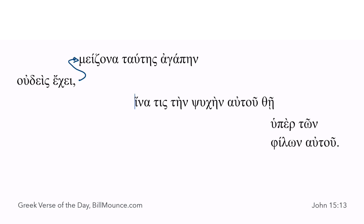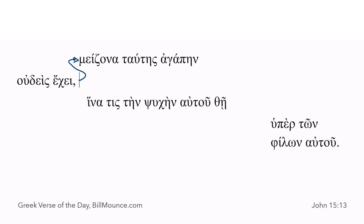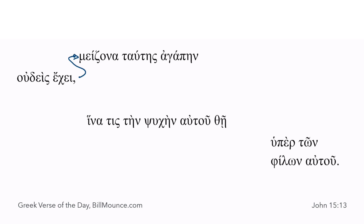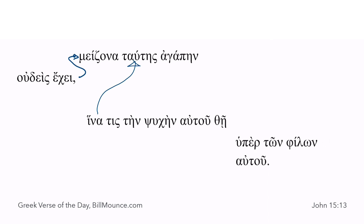If you don't want that last line to wrap, you could always bring it back and indent it this way, and draw your line showing that the 'hina' clause is telling us about the 'tautes.' That would allow us to bring it like that. So: no one has love greater than this, that someone lay down his life on behalf of his friends.